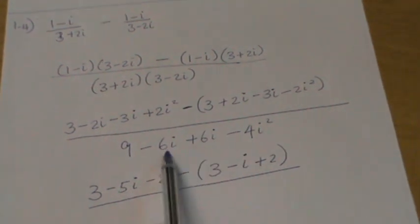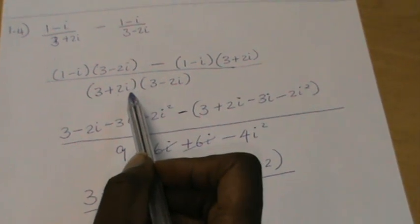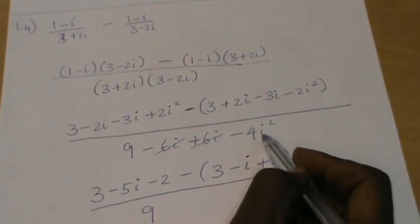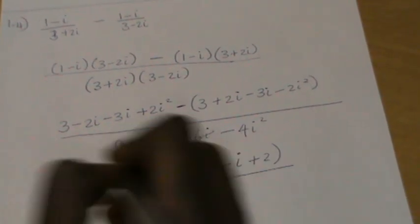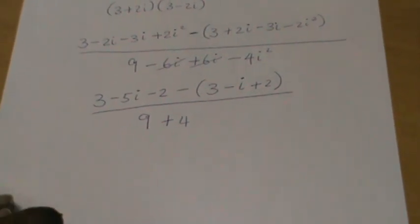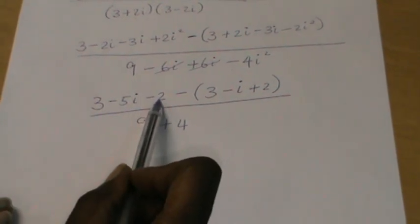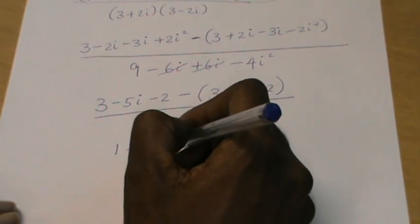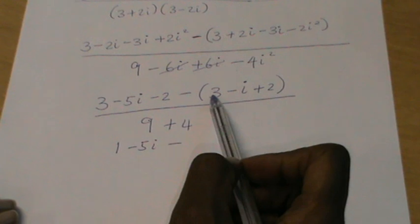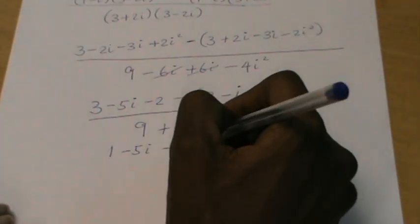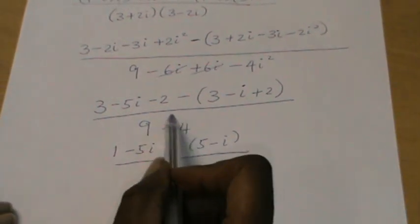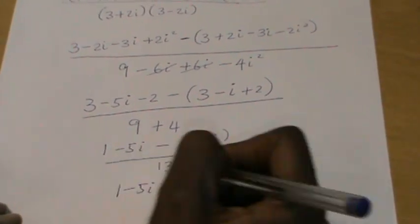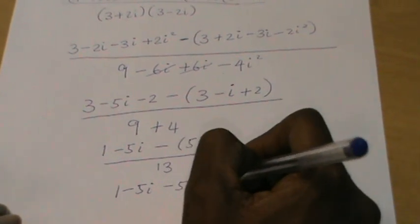In the denominator, these middle terms cancel out — which makes sense because those two are conjugates of each other. So I have 9 minus 4i squared, and i squared is minus 1, so minus 4 times minus 1 is plus 4, giving 13. Continuing to simplify the numerator: I have 3 minus 2 which is 1 minus 5i, then minus the bracket which simplifies to 5 minus i, all over 13.